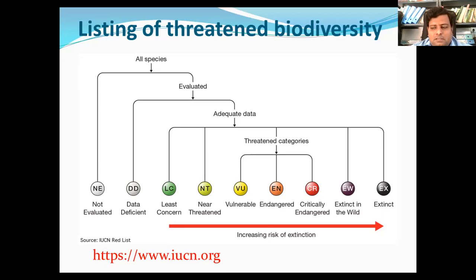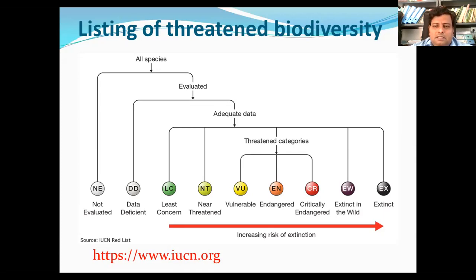Data Deficient is another category. This condition is applied to species in which the amount of available data related to their risk and existence is lacking in some way, so a complete assessment cannot be confirmed. Unlike other categories in the list, this category does not describe the conservation status of a species — it simply means data is not yet available.